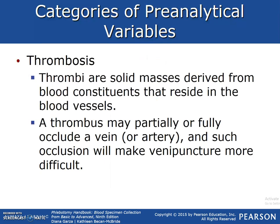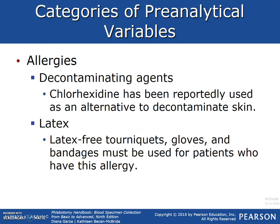A thrombus or thrombi are solid masses derived from blood constituents that reside in the blood vessel. A thrombus may partially or fully occlude a vein, making venipuncture more difficult. Allergies: patients may have allergies to decontaminating agents. Chlorhexidine has been reported as an alternative for decontaminating skin and is also used during blood culture procedures. Latex-free tourniquets, gloves, and bandages must be used for patients with latex allergies, and this is included in our interview prior to drawing the patient.